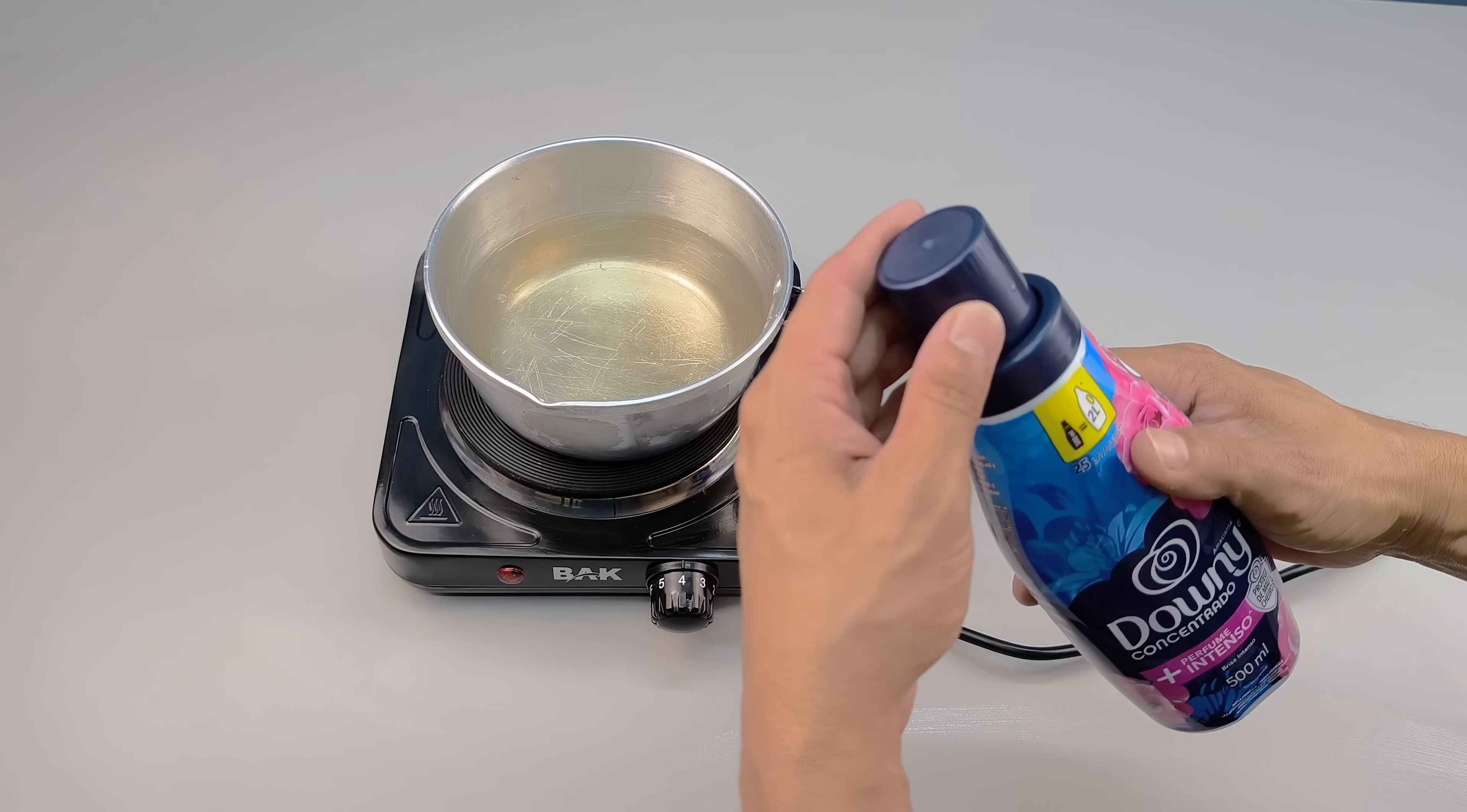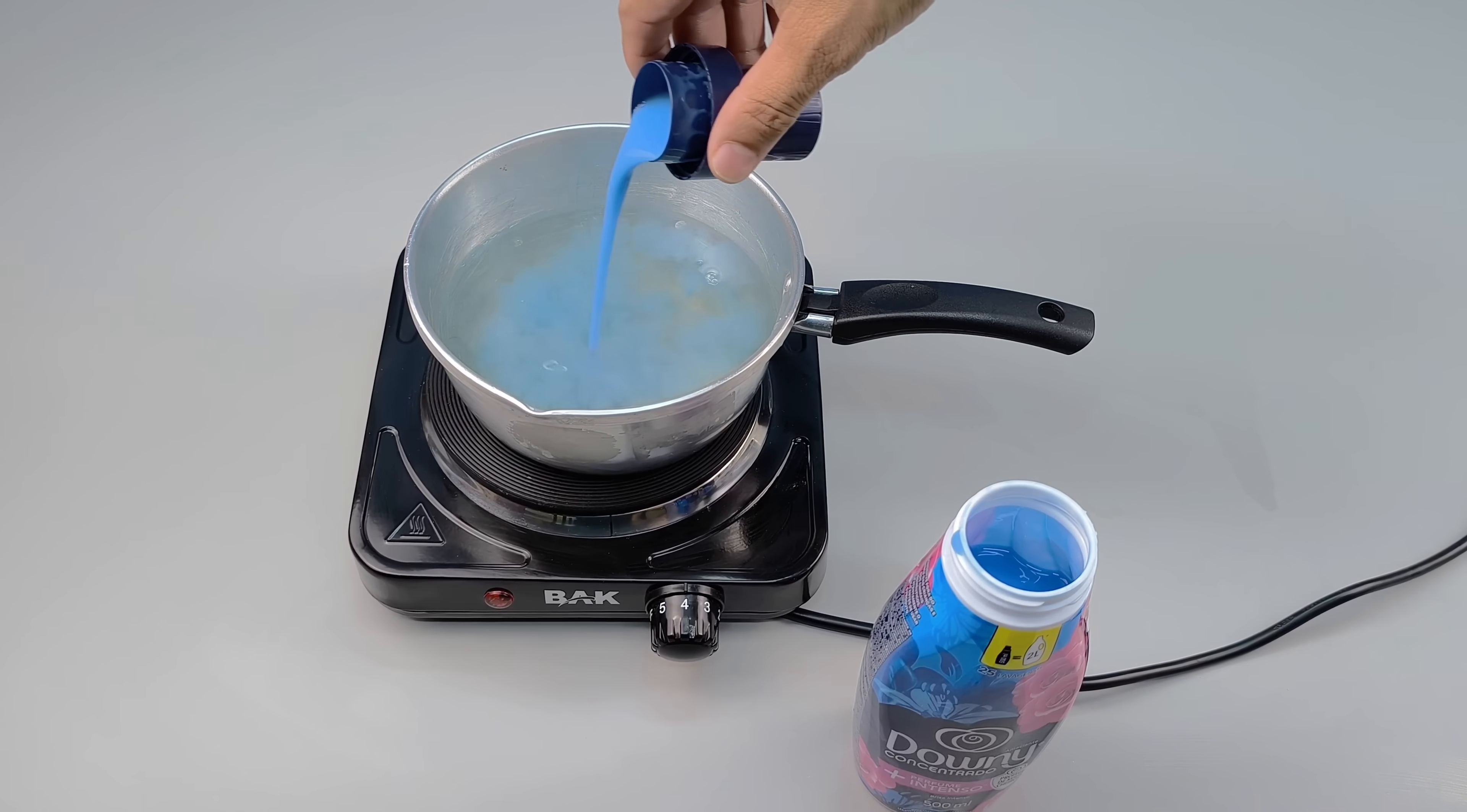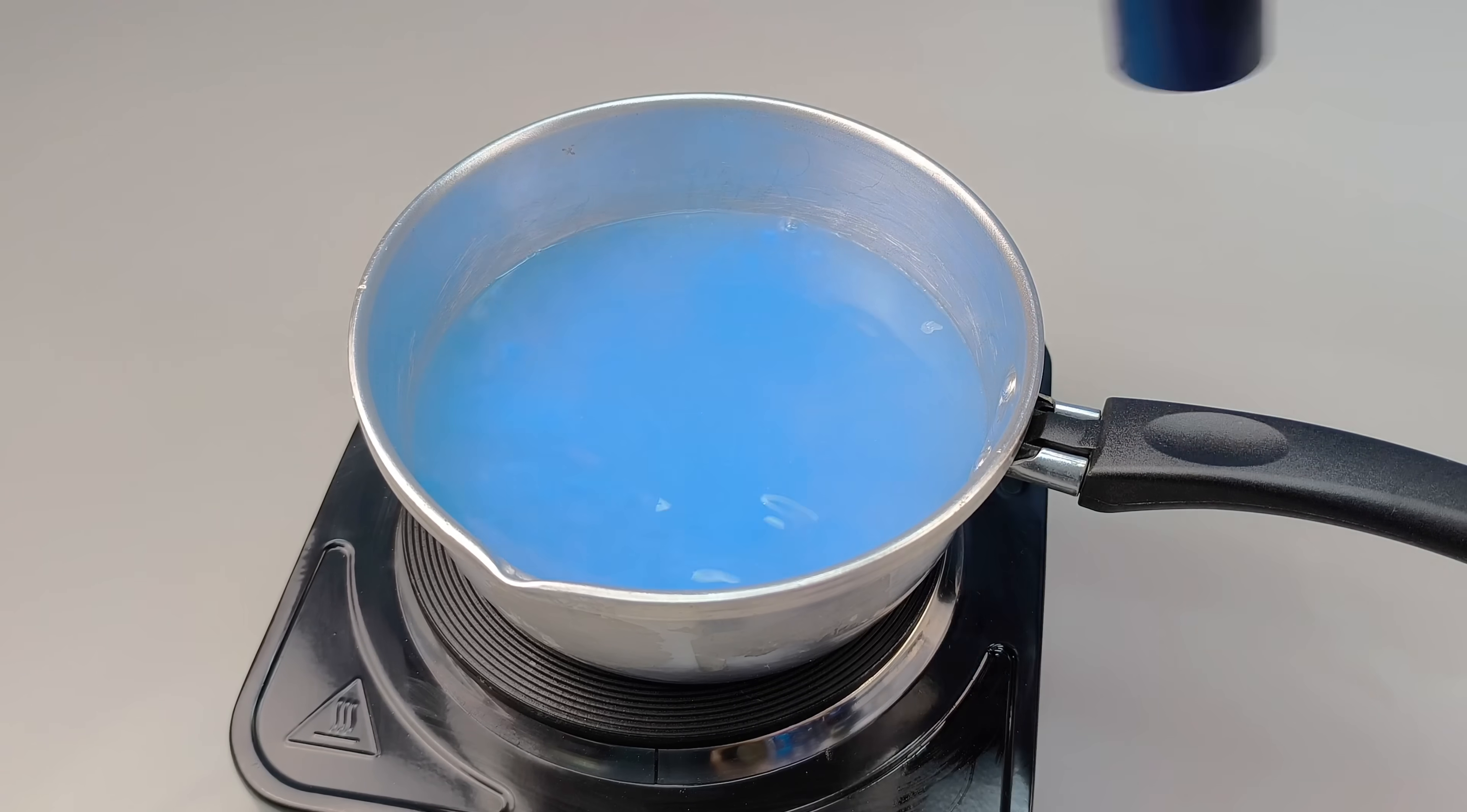Next, pour 100 milliliters of fabric softener directly into the still warm mixture. Choose an intense, striking, and long-lasting fragrance, one that leaves a pleasant scent in the room for hours, even after application. Continue stirring gently until all ingredients are completely and evenly mixed.